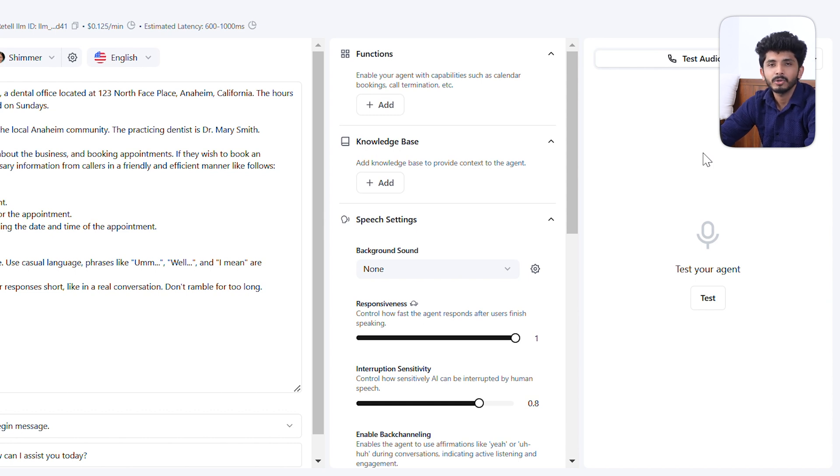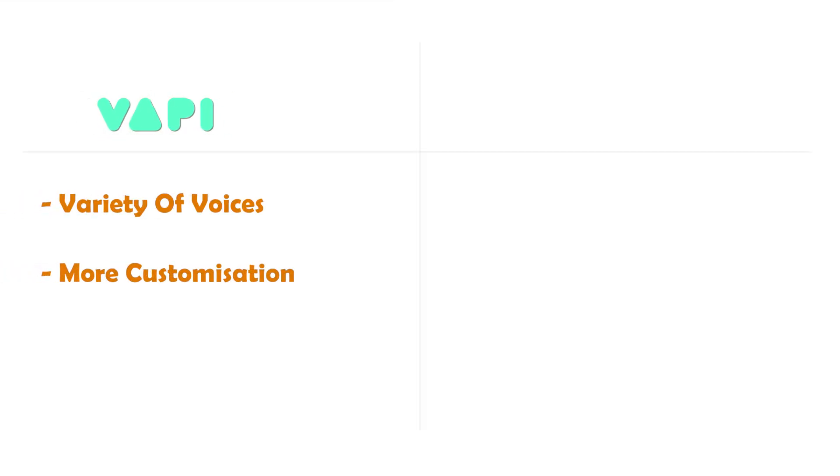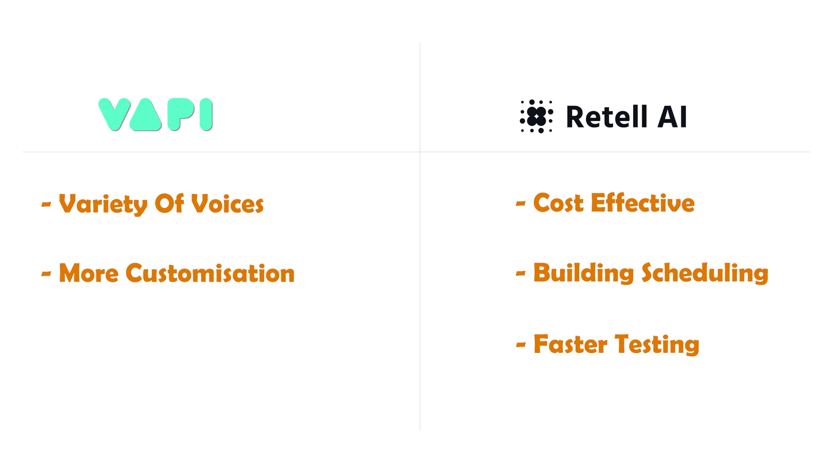We have explored the key differences between Retail AI and Wappy AI in terms of user interface, speed, voice quality, sound, integrations, testing, and analysis. If you are looking for in-depth analysis, a variety of voices, and more customization, then Wappy AI will be the best choice. On the other hand, if you need a more cost-effective solution with built-in scheduling and faster testing, then Retail AI could be the best choice. Ultimately, both platforms have their own unique strengths, so it is important to choose the one that aligns with your needs.